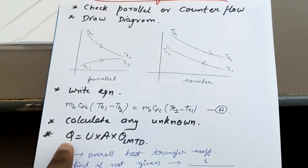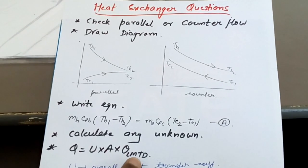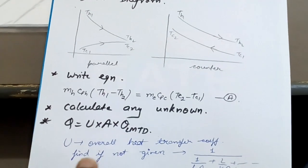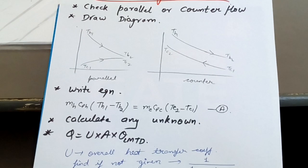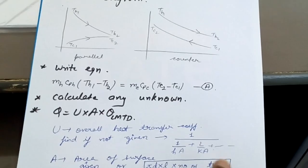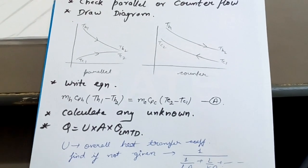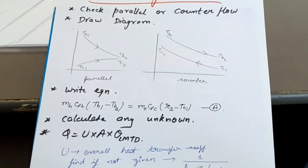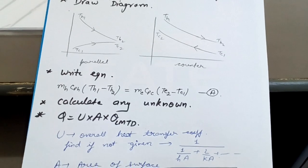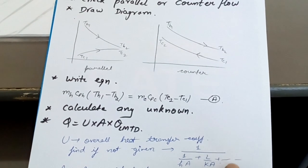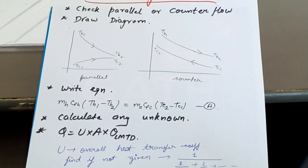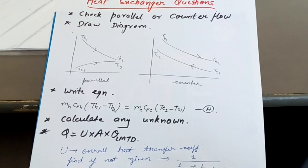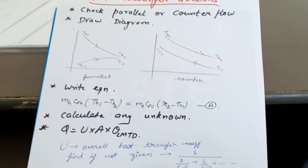Then the heat transfer is Q = U × A × θ_LMTD, where LMTD is the log mean temperature difference and U is the overall heat transfer coefficient. If U is given in the question that is fine; if not, you have to find it using 1/U = 1/(hA) + L/(kA) and so on — accounting for the inner convective resistance, the wall conduction (thickness L and thermal conductivity k), and the outer convective resistance 1/(h_o × A).